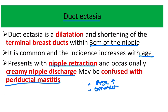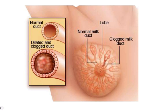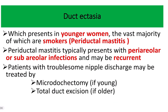An important differentiating point: secretion occurs in duct ectasia through the lactiferous duct or terminal breast duct. But in periductal mastitis, there is no such secretion — instead there is abscess formation and sometimes bursting of the abscess. In this picture, the normal duct is shown, and in duct ectasia the lumen of the duct increases — the diameter increases, representing dilatation of the milk duct. Here we can see the dilated duct, which is known as duct ectasia.